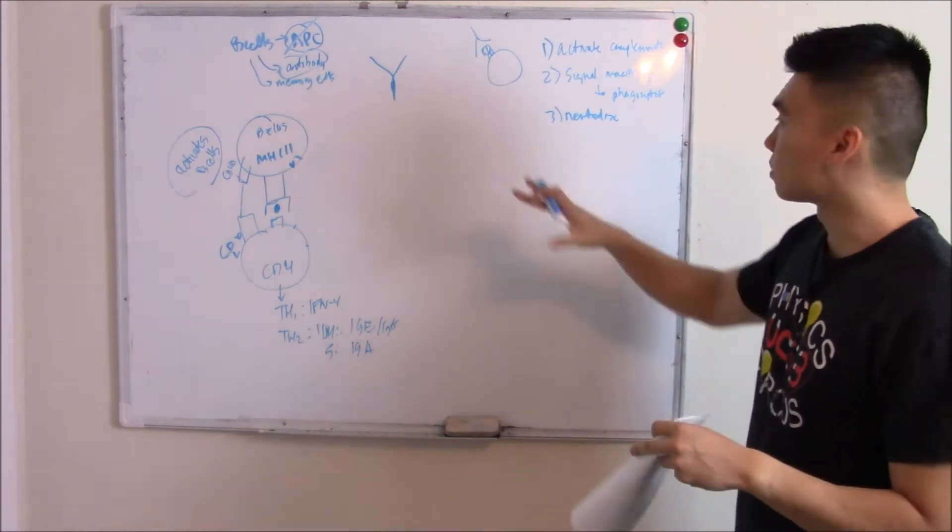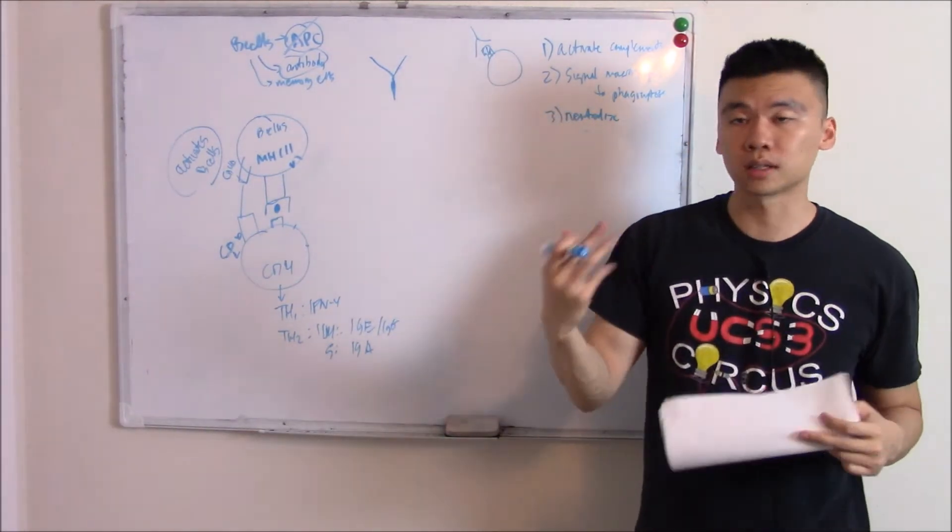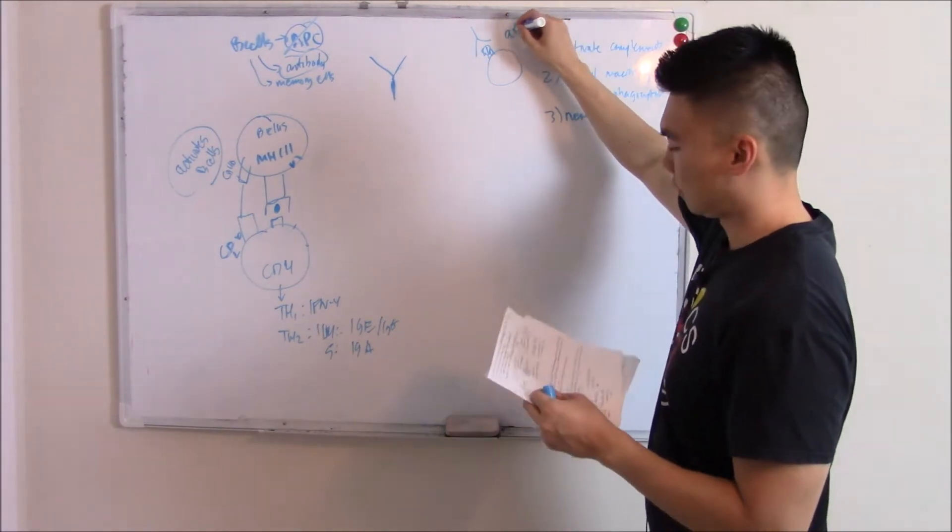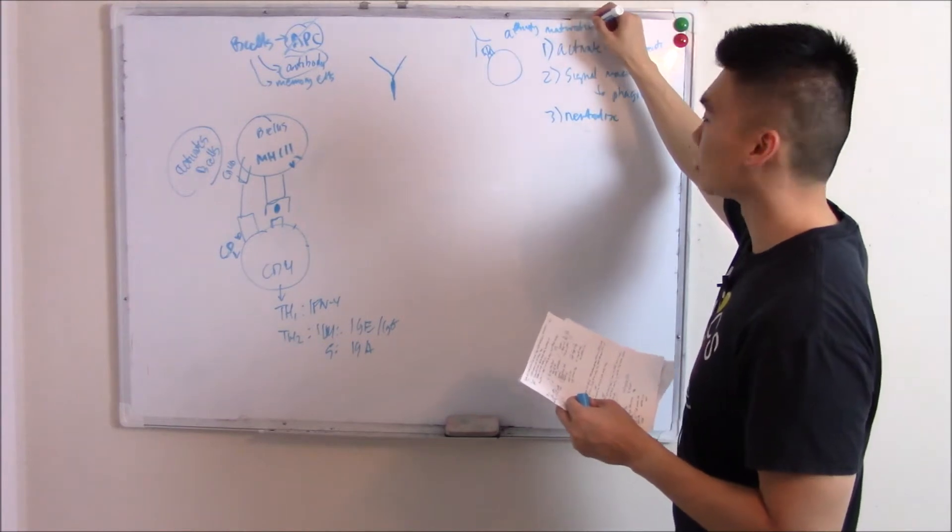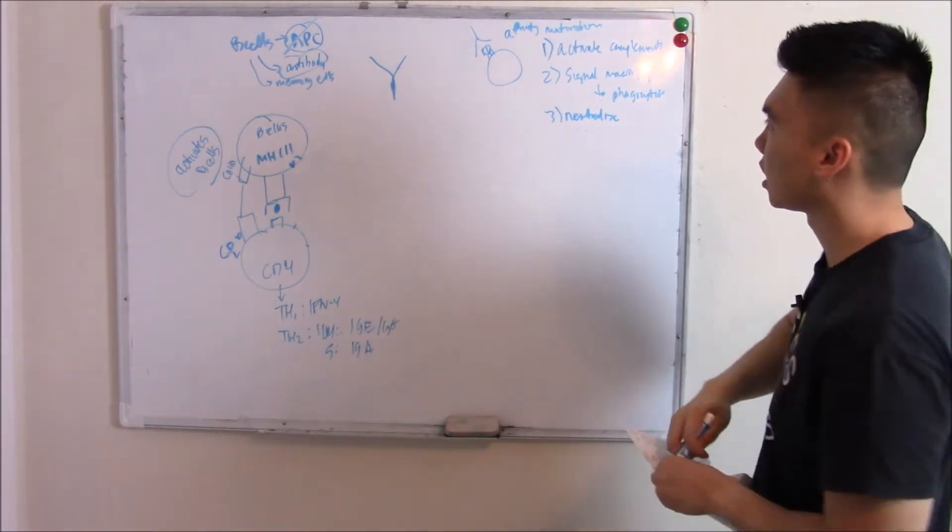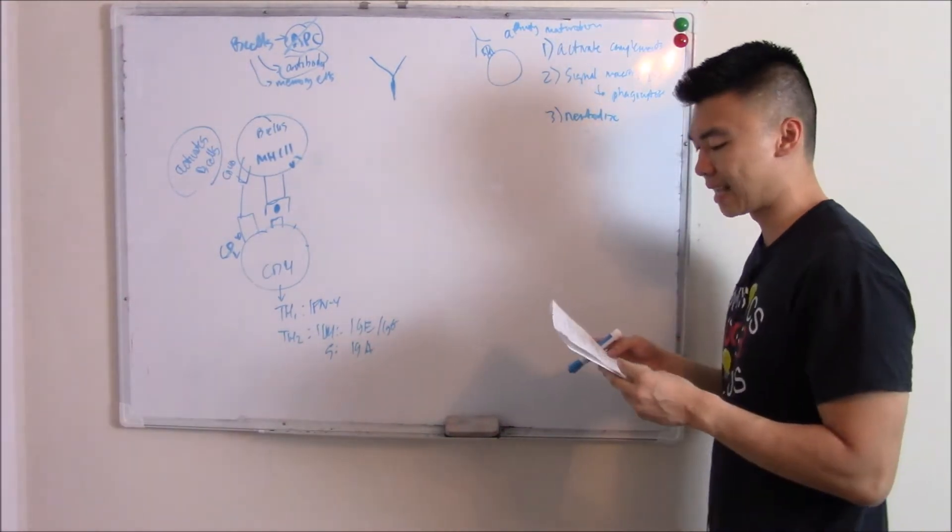And the more times it's exposed to that same antigen, the stronger and the better it'll get. We call that affinity maturation. That makes sense. The more times you do something, don't you get better at it? Your antibodies are the exact same.